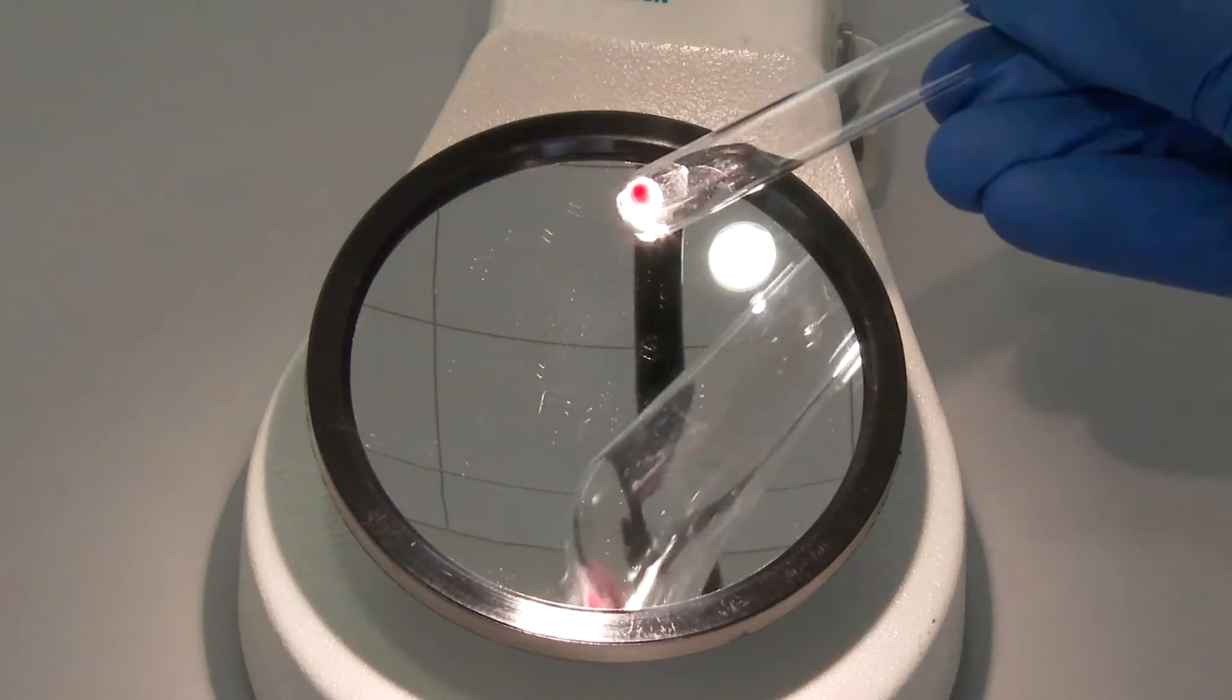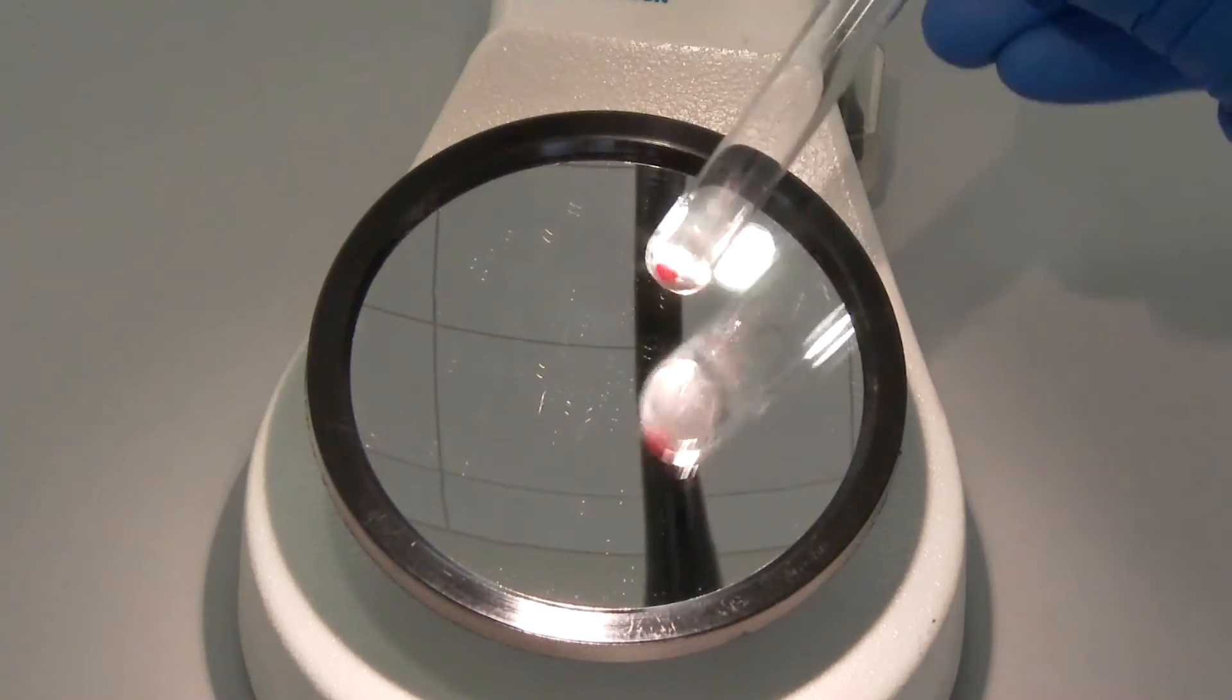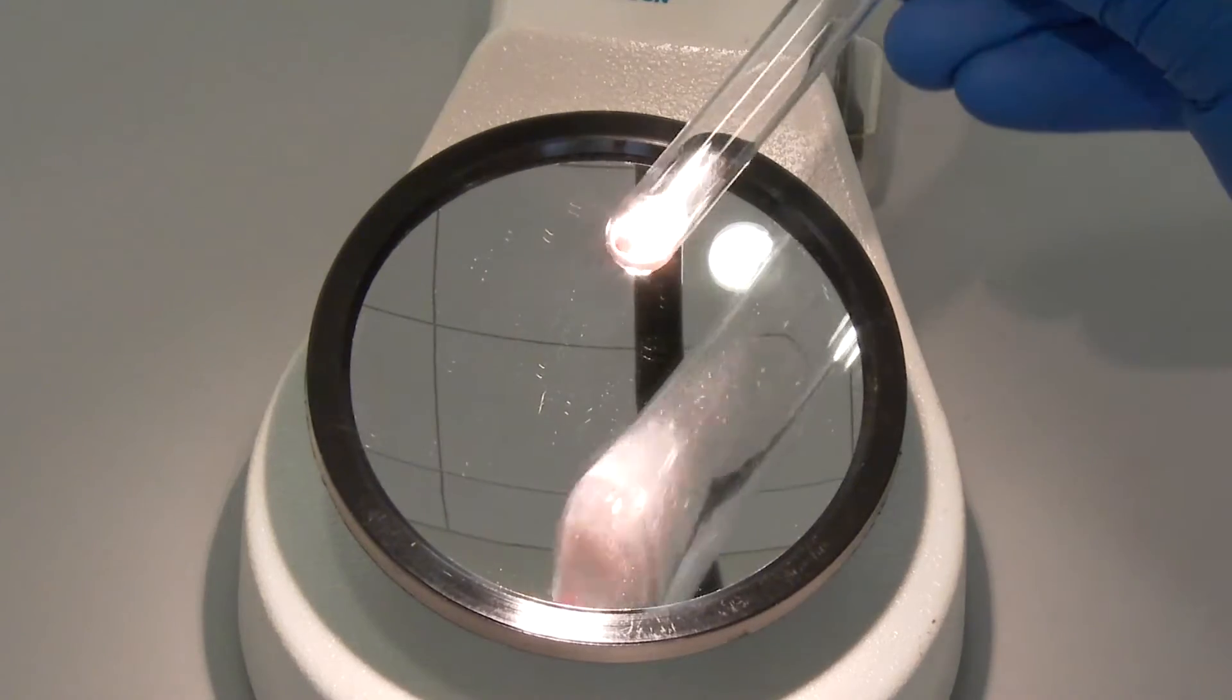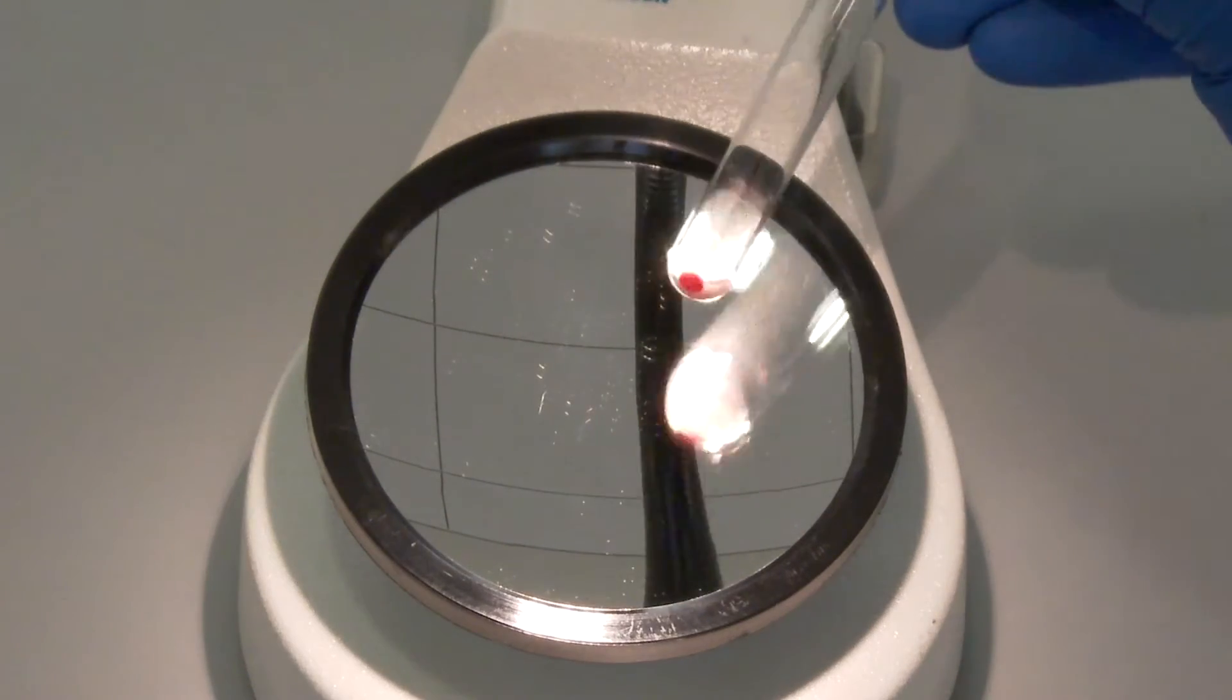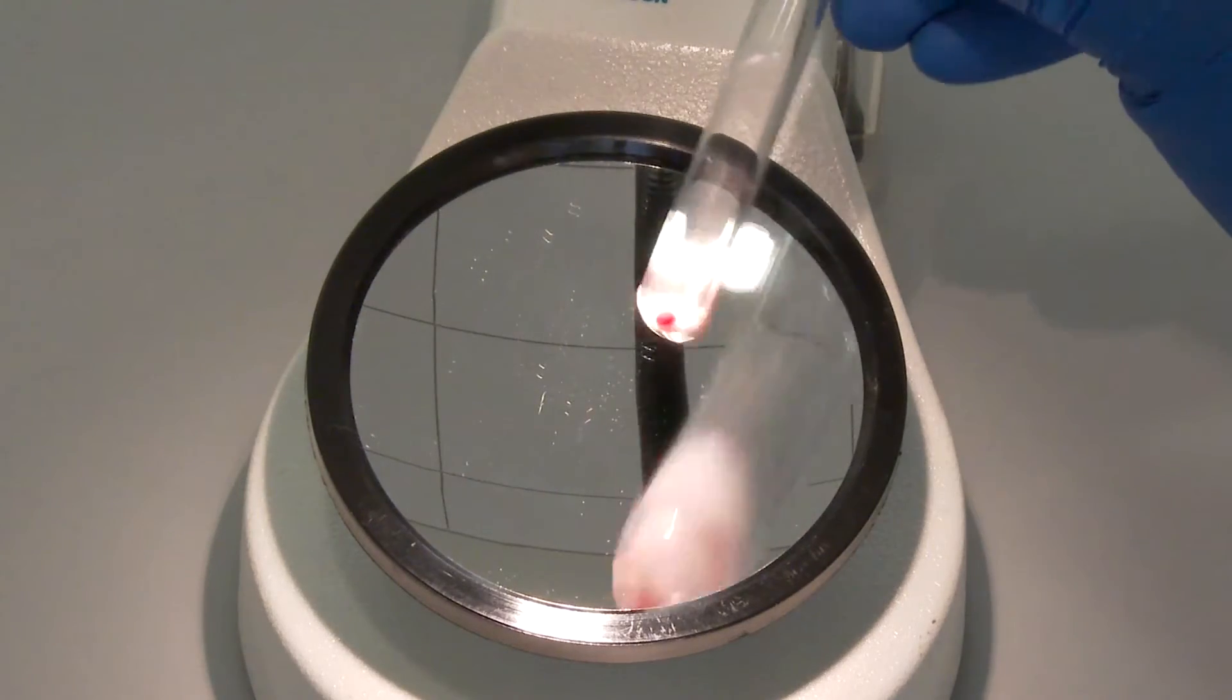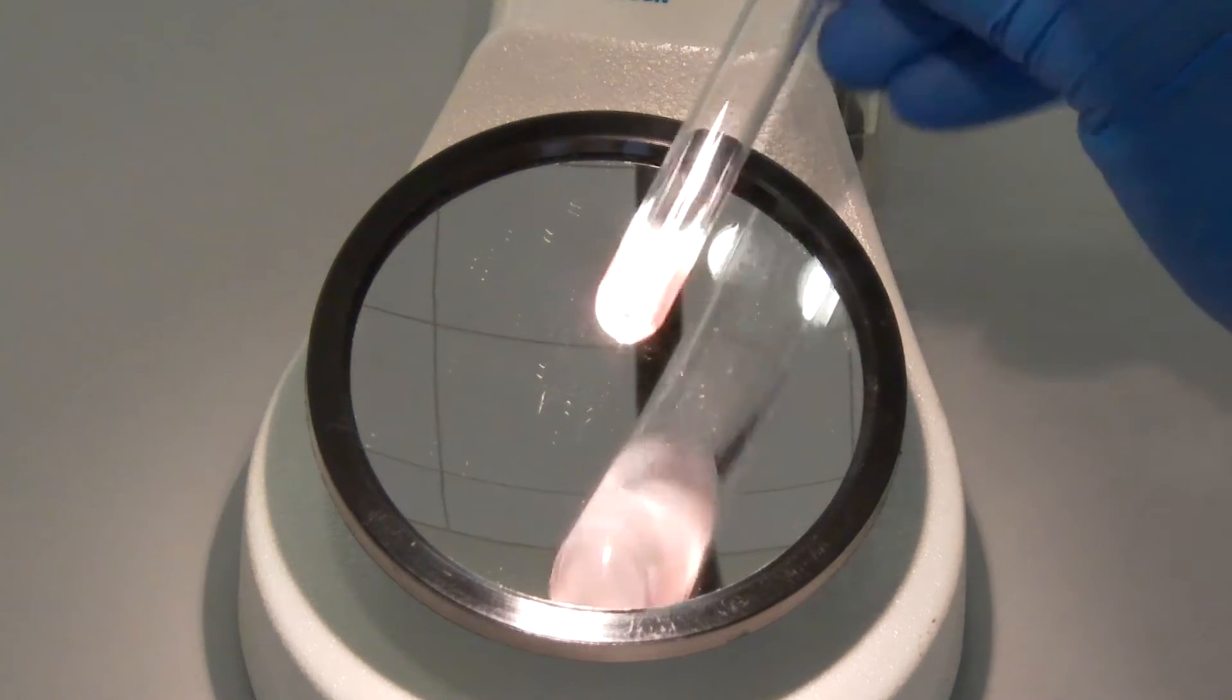As an important note, sometimes a very strong agglutination reaction can become stuck to the interior walls of the test tube. Care should be taken not to over-shake the test tube in this case, which could break up a 4 plus reaction into many smaller clumps and could result in making a falsely weaker interpretation of the original reaction.